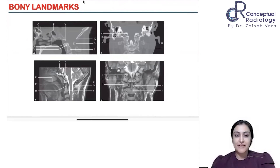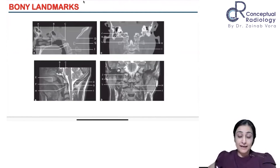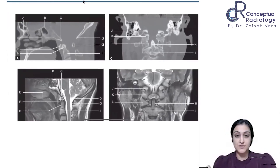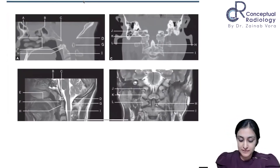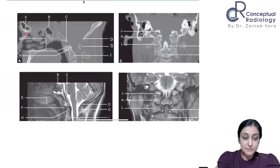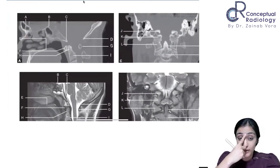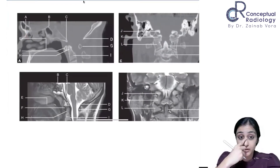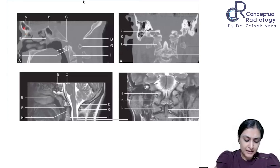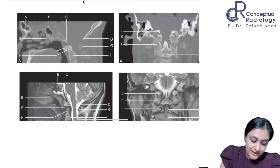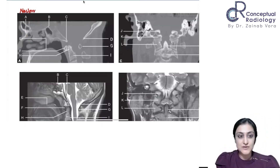So I have CT and MRI images here. You guys have to tell me the answers — a few of the things are pretty basic. What is point A here? What is the point where the frontal bone meets? That is the nasion, right? Where the frontal beak meets the ethmoidal bone — this is the nasion.